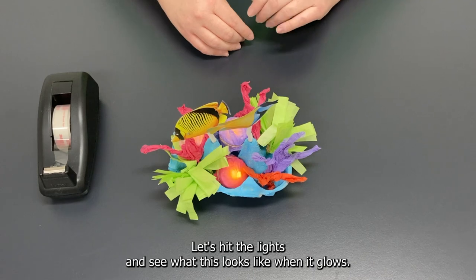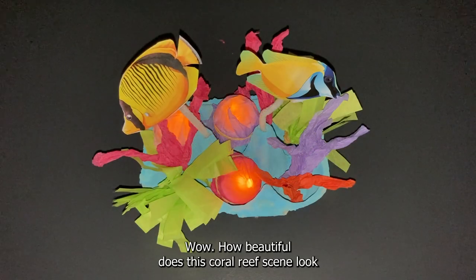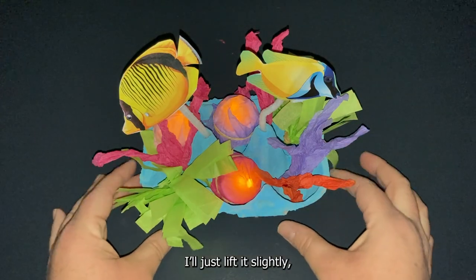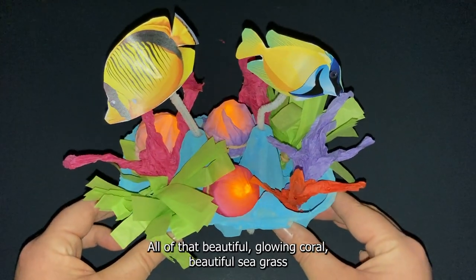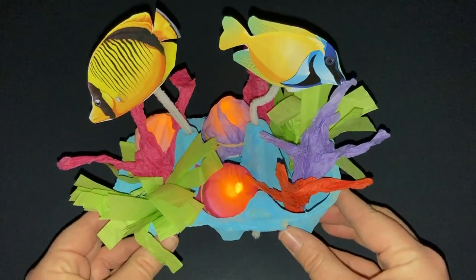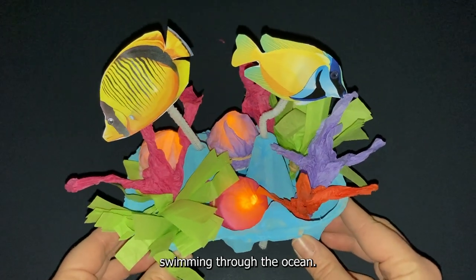Let's hit the lights and see what this looks like when it glows. Wow how beautiful does this coral reef scene look glowing in the dark? I'll just lift it slightly just gently so you can see all of the details. All of that beautiful glowing coral, beautiful sea grass and those beautiful tropical fish swimming through the ocean.